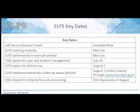This is a list of key ELPS administration dates. Most importantly, the AIR Secure Browser needs to be installed on all computers — it is available now for download, so any device used for ELPS testing needs it installed. TIDE will open on July 23rd for both user and student management, and the ELPS administration window for 2018-2019 will open on August 1st.